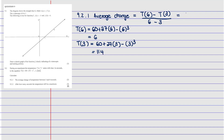Substituting into the formula: (6 − 114) divided by (6 − 3). When you put that into the calculator you get negative 36. So the average change of temperature is equal to negative 36.